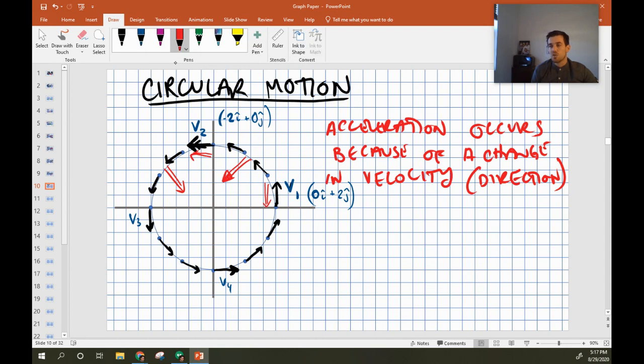I once again have to lose my vertical velocity, which means I have to lose part of this, and I have to gain the horizontal, which gives me a velocity vector pointing in that direction. And finally, from 4 to 1 again, I have to lose the horizontal and gain the vertical, giving me a velocity vector that looks like that.